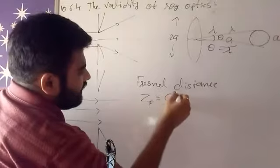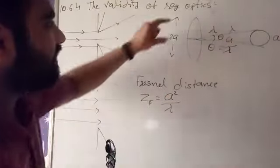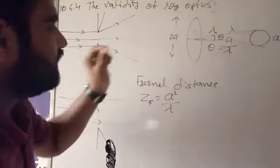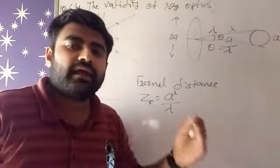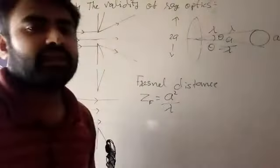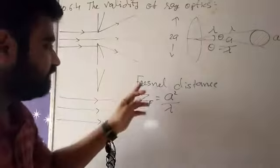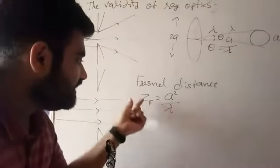It is A square upon lambda. A means half of the diameter of the lens and lambda is the wavelength of light which is passing through the lens. Right, that is our Fresnel distance, which is the minimum distance.